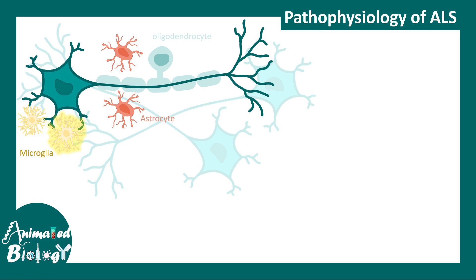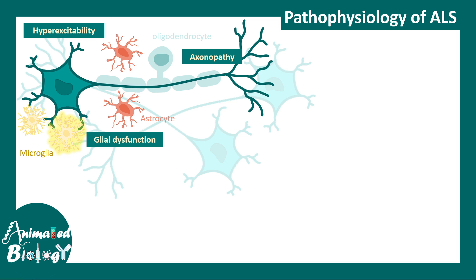In ALS, like many other neurodegenerative diseases, different cell types are involved. That includes neurons and glial cell types like oligodendrocytes, astrocytes, and microglia. There can be axonopathy, glial dysfunction, and hyperexcitability of these neurons.